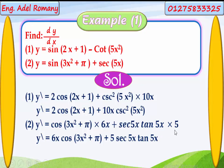Simplifying: the final answer is 6x cosine(3x squared plus pi) plus 5 sec(5x) tan(5x).